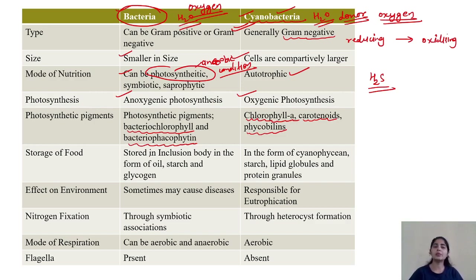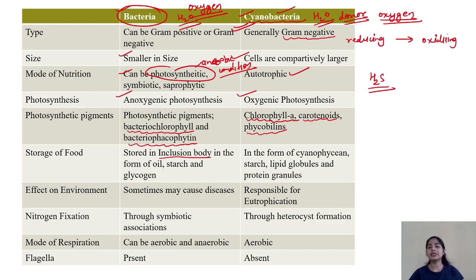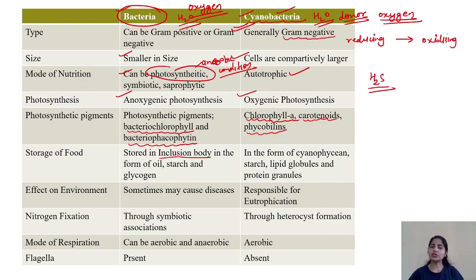When we talk about food storage, in bacteria there are inclusion bodies which store food in the form of oils, starch, or glycogen. But in the case of cyanobacteria, cyanophycin granules are present. Specifically, they store food as starch, lipids, or protein granules.